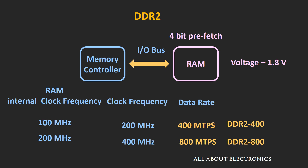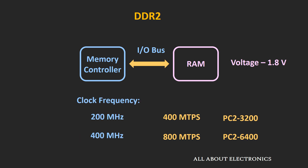To handle this doubled amount of data, the IO bus clock frequency must also be doubled. If the DDR2 RAM internal clock is 100 MHz, the IO clock must be 200 MHz, giving a data rate of 400 MT/s. At 400 MHz IO clock, the data rate is 800 MT/s, written as DDR2-800. On a DDR2 module, you will find PC2-6400, indicating a data rate of 6400 MB/s.